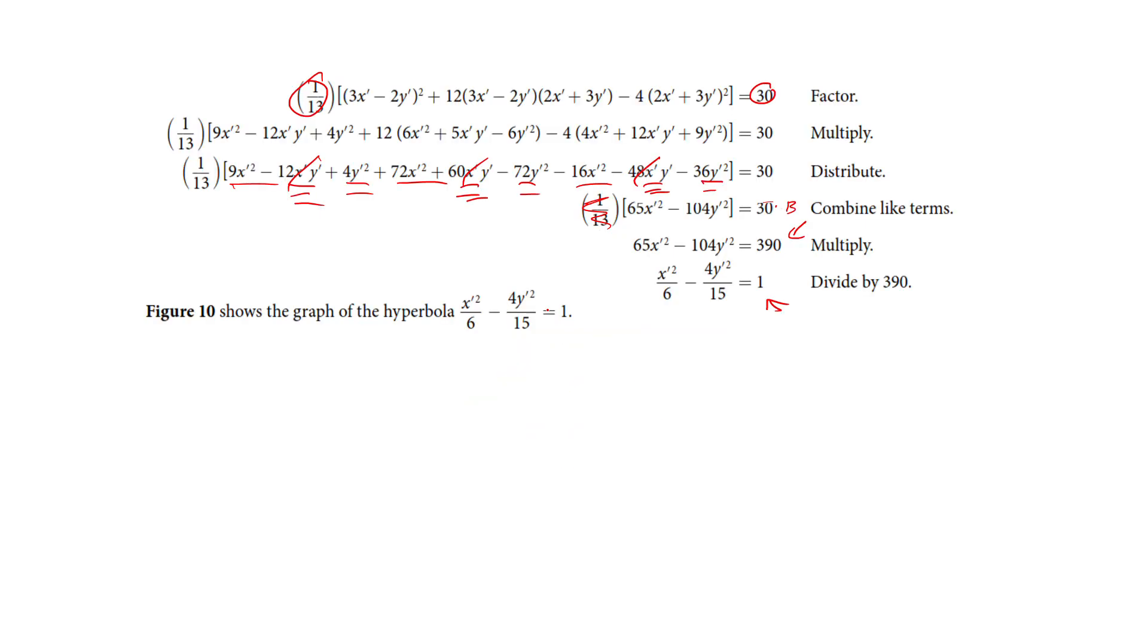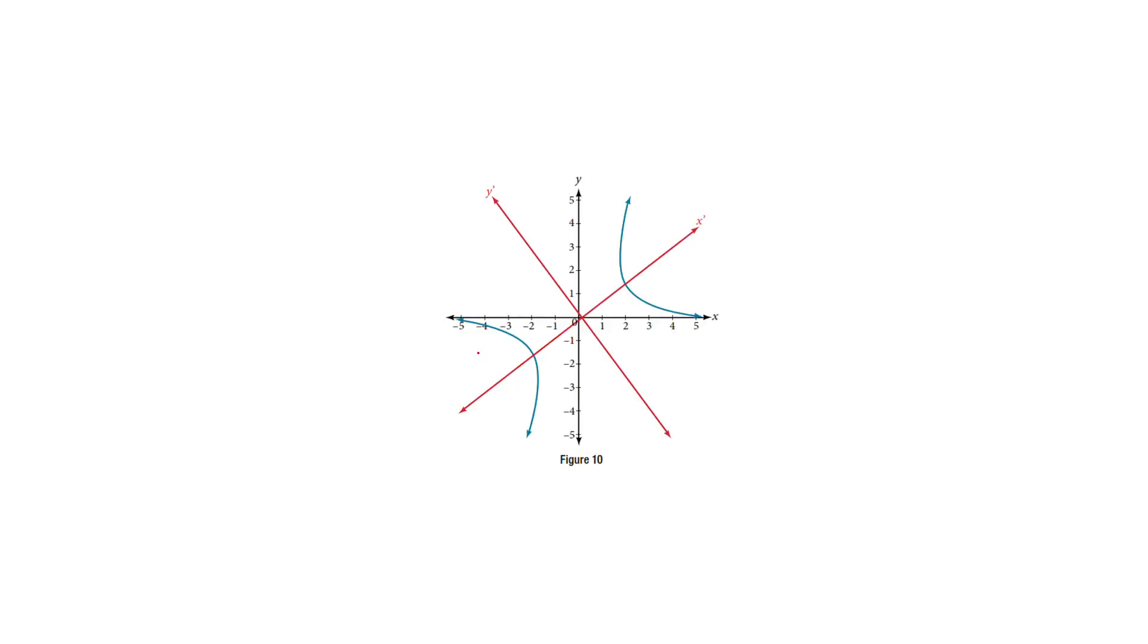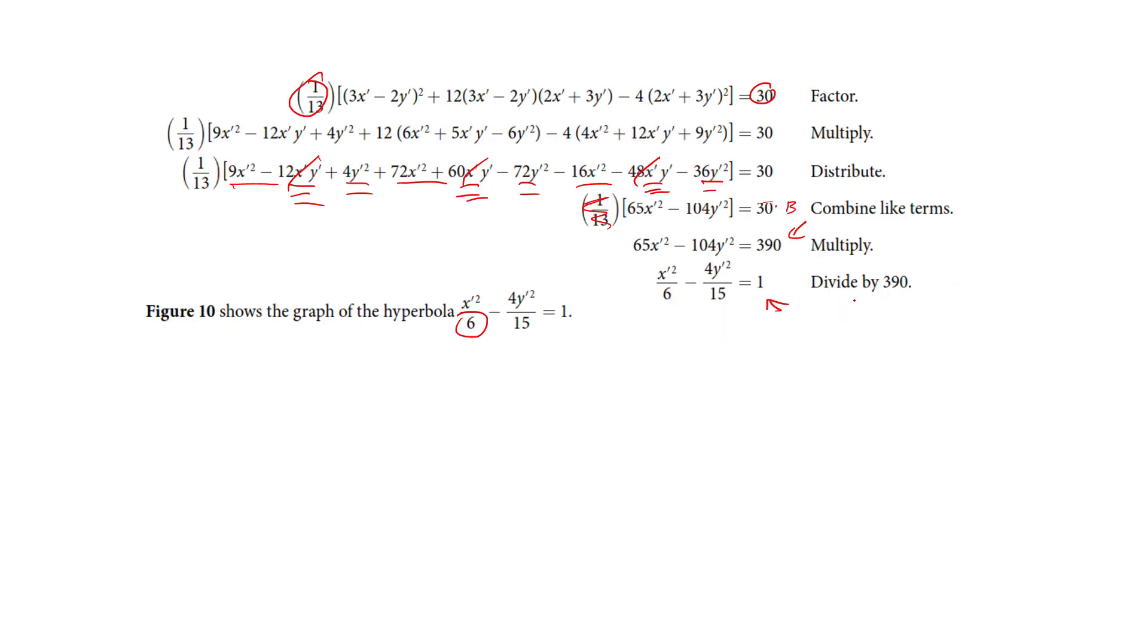And if you remember how this works, we're going to get to the hyperbola with the square root of this number, the square root of 6. So we're going to go along this axis. Square root of 6 is this length. Square root of 6 is this. And then we make the asymptotes.